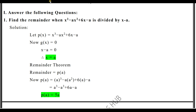Let p(x) = x³ - ax² + 6x - a. g(x) is x minus a. Now we need to find the value of x. Equate g(x) to zero: x minus a equals zero, so x equals a. Now substitute the value x equals a into p(x), replacing every variable x with a.